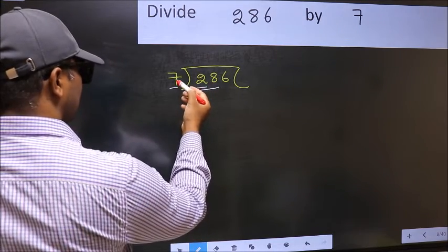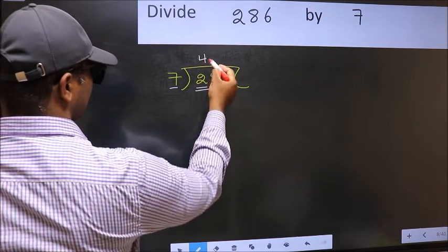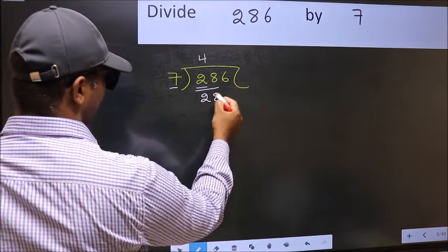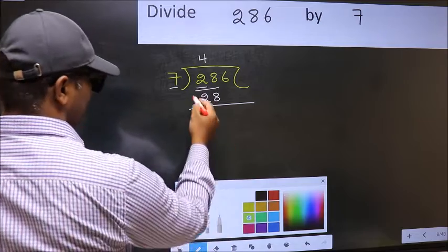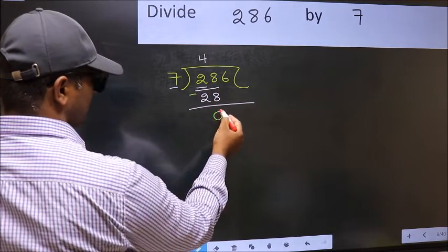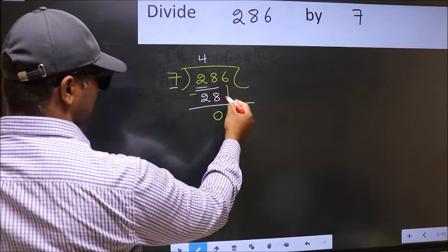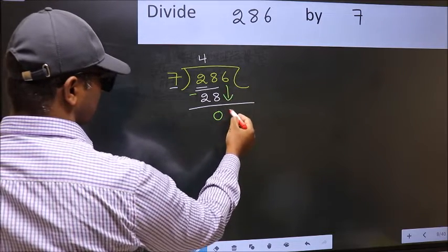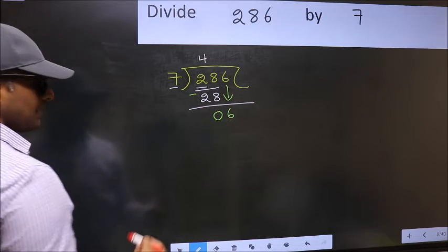When do we get 28 in 7 table? 7 fours 28. Now you should subtract. 28 minus 28 is 0. After this, bring down the beside number. So 6 down. After this step, the mistake happens.